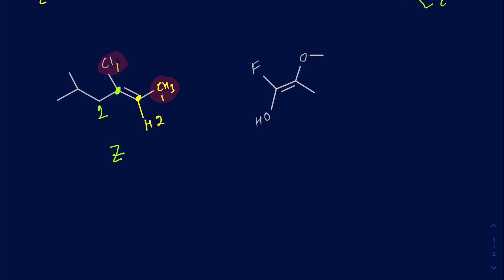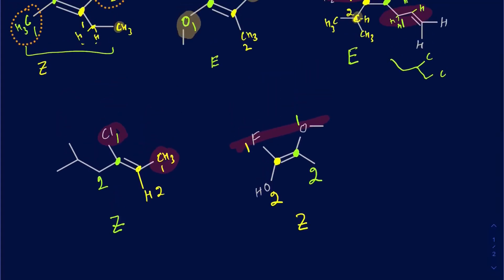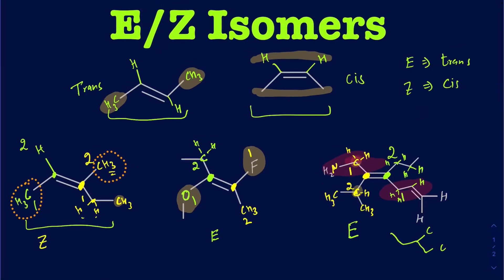On the next example: fluorine is on the top and oxygen on the bottom of the first carbon — fluorine has a higher atomic number so it's priority one and oxygen is priority two. On the second carbon, oxygen is priority one and the carbon with the methyl group is priority two. The higher priority groups are on the same side and lower priority groups are on the same side, making this Z as well. E and Z are similar to but not exactly the same as cis and trans. Cis and trans is used mainly when you have the same type of substituents on the double bond carbons; otherwise, the better terminology is E or Z.